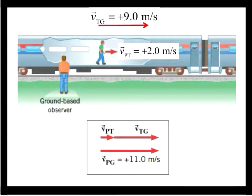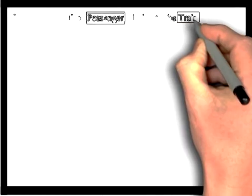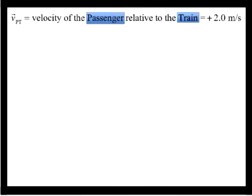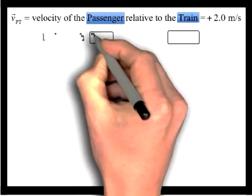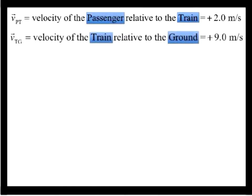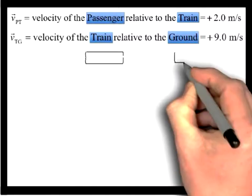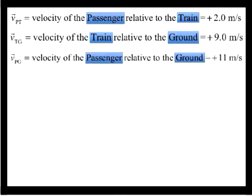A useful technique for dealing with relative velocity problems is to keep track of the different velocity vectors by using a system of subscripts. Let's define the following symbols for our train example: V sub pt will be the velocity of the passenger relative to the train, which is positive 2.0 meters per second. V sub tg is the velocity of the train relative to the ground, which is positive 9.0 meters per second. And v sub pg is the velocity of the passenger relative to the ground, which is equal to positive 11 meters per second.